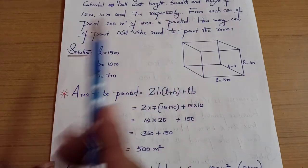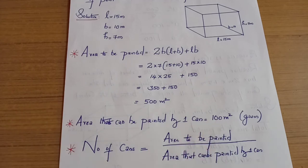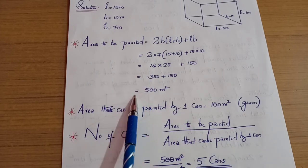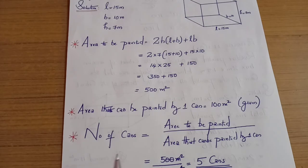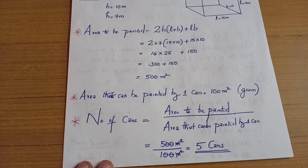For each can of paint, 100 meter squared of area is painted. Number of cans to be used equals area to be painted divided by area painted by one can. That is 500 divided by 100, which equals 5 cans of paint.